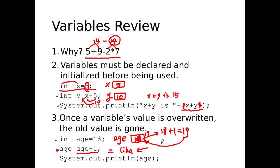So the last statement will display 19. It won't display 18 at all. So those are the three things I really want to stress about variables.